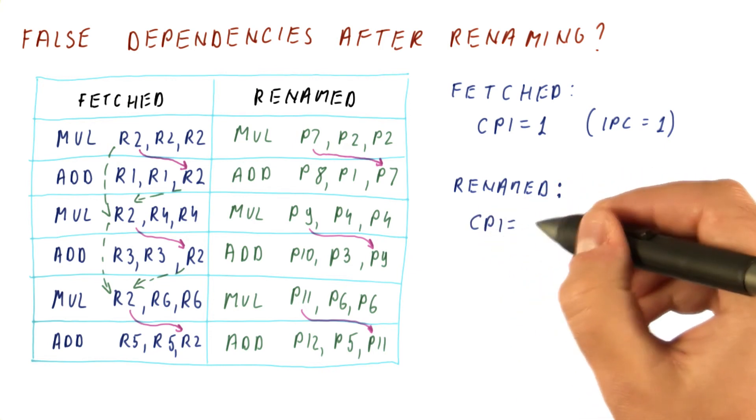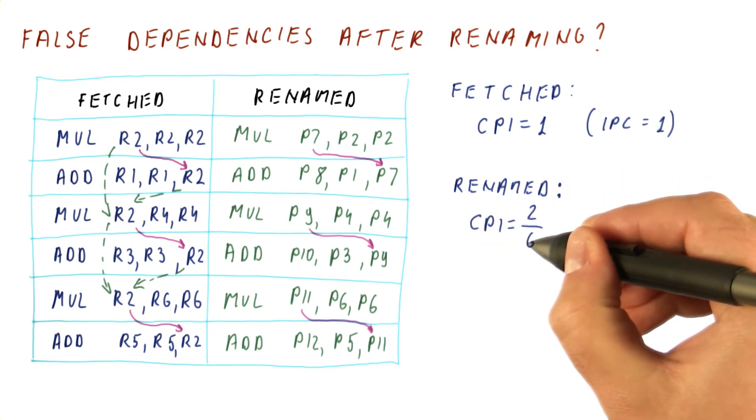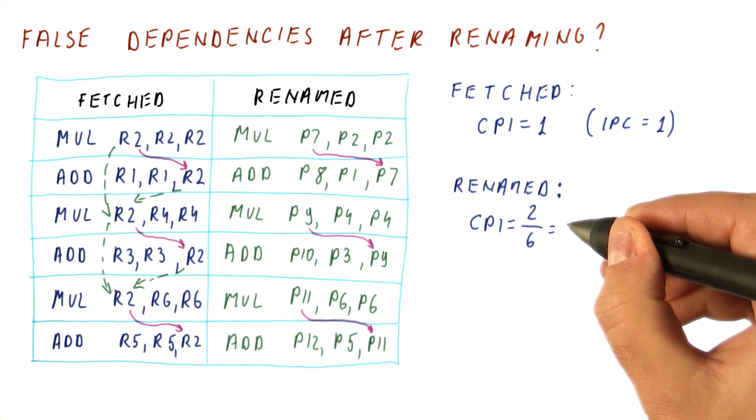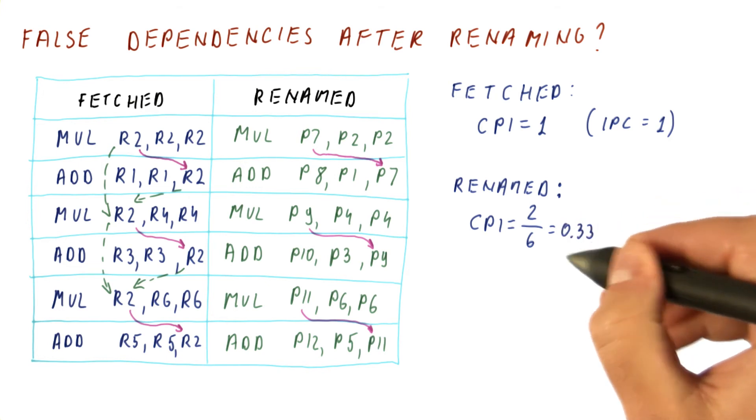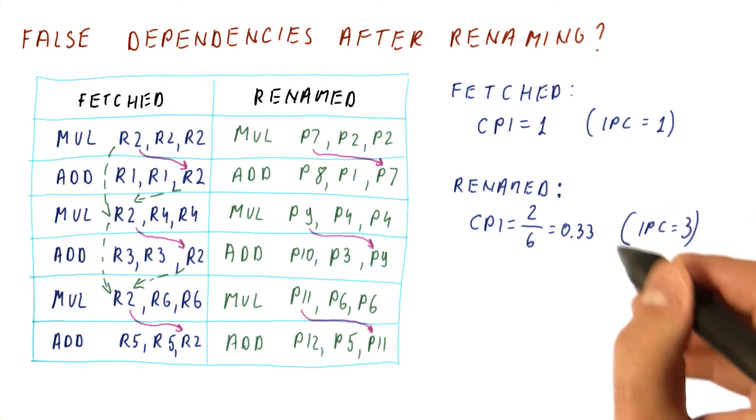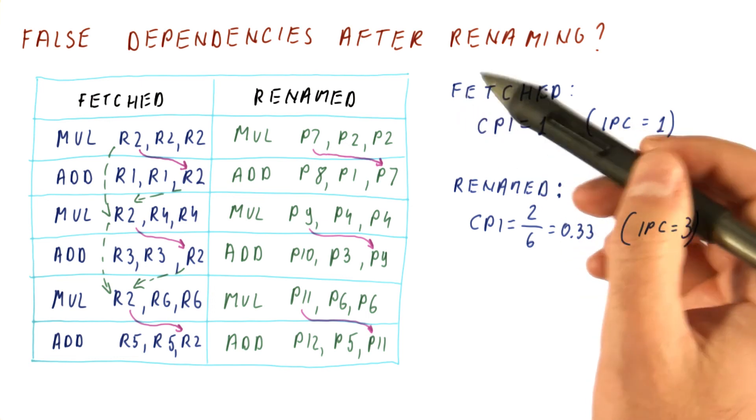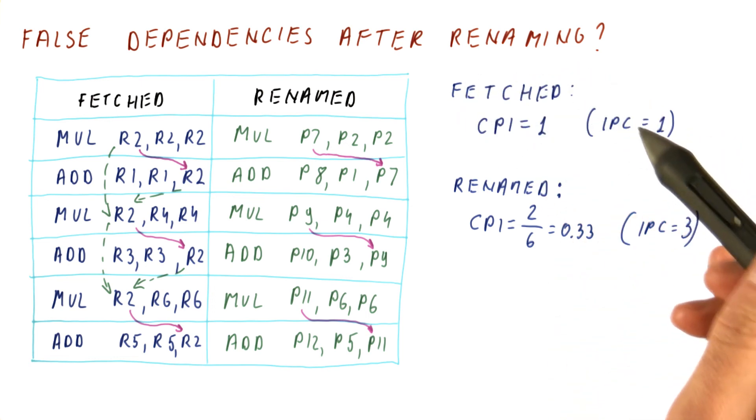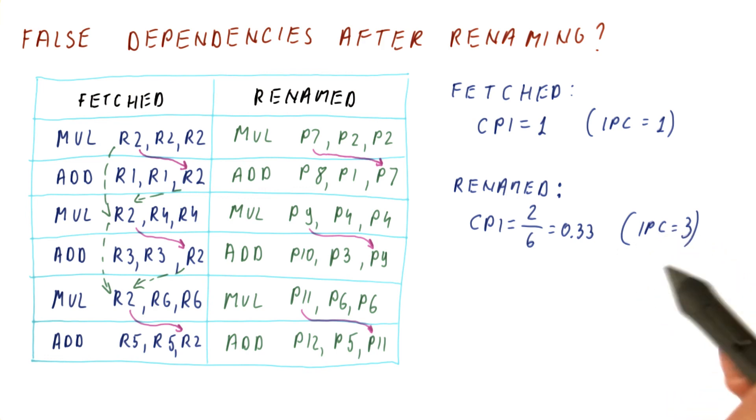The cycles per instruction is two cycles for six instructions, giving us a much lower CPI of only 0.33, or we can write it as IPC of three, meaning we execute three instructions per cycle. As you can see, our renaming gave us a much better potential for executing this program quickly.